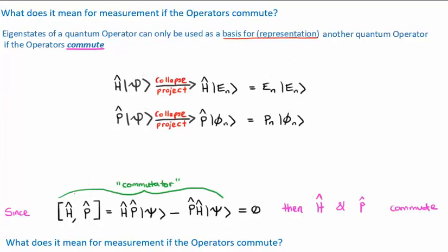I leave it as a reasonably simple exercise for you to show that the Hamiltonian and momentum operators commute, using this process. We'll find that the commutator is zero and that the operators commute. We're going to explore what this means for the measurement of momentum and energy of the system psi.